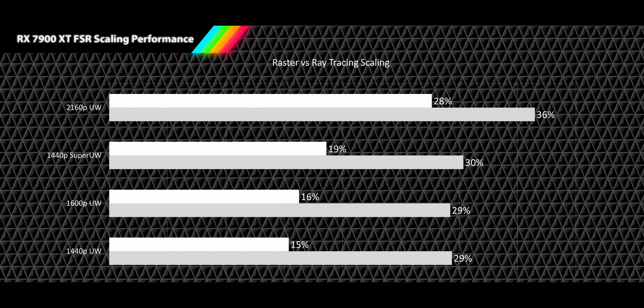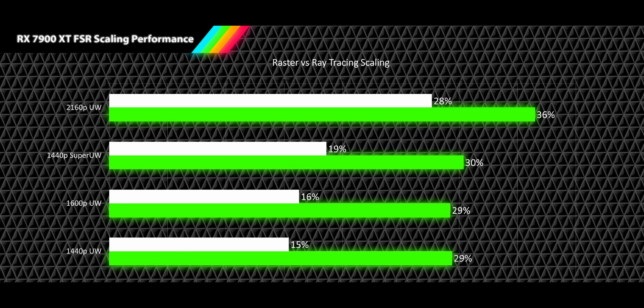When we compare raster versus ray tracing scaling, across the board we see ray tracing FSR results scaling much better and much more consistently at lower resolutions when ray tracing is turned on. This tells me that FSR and DLSS are well positioned to become key factors in performance as we move into an era of every game including ray tracing, and every pixel incurring the cost of multiple rays.